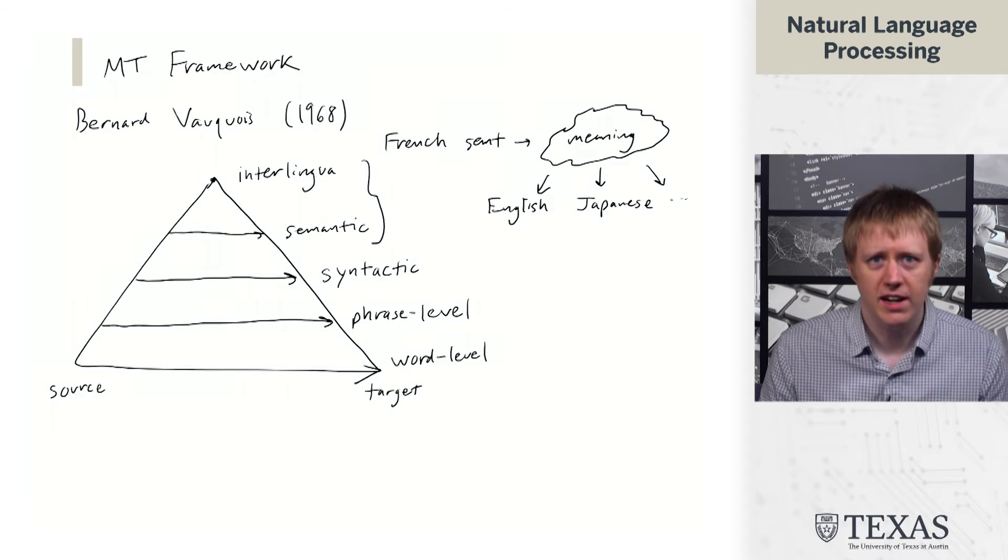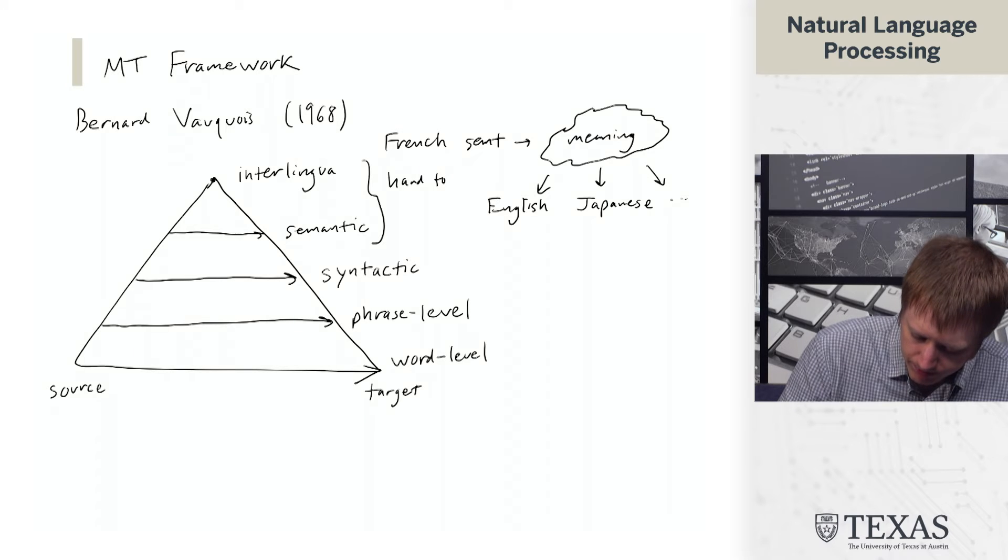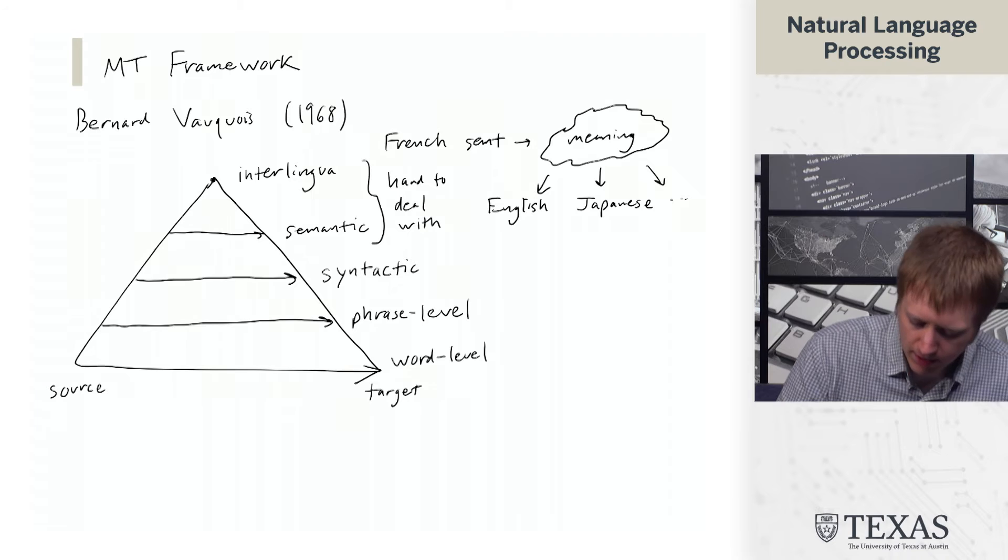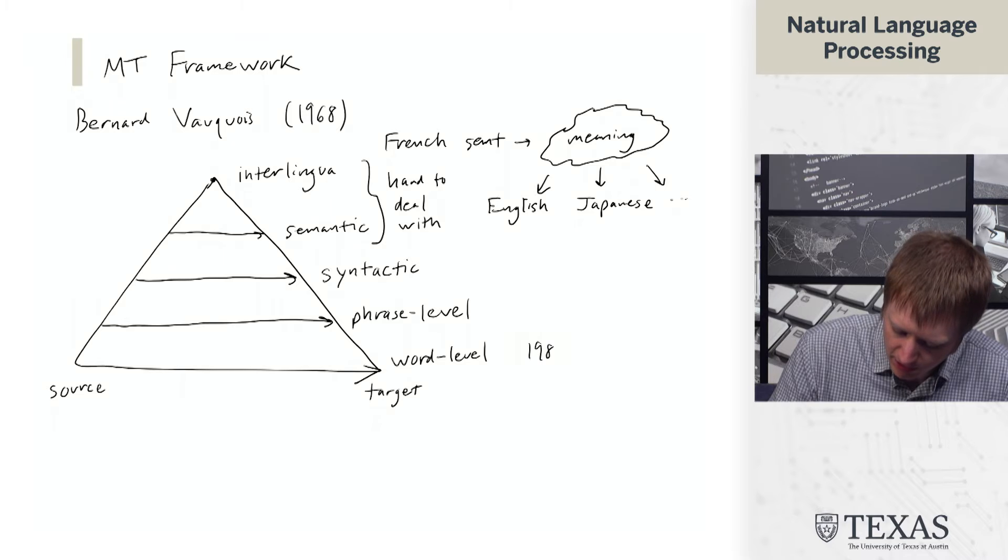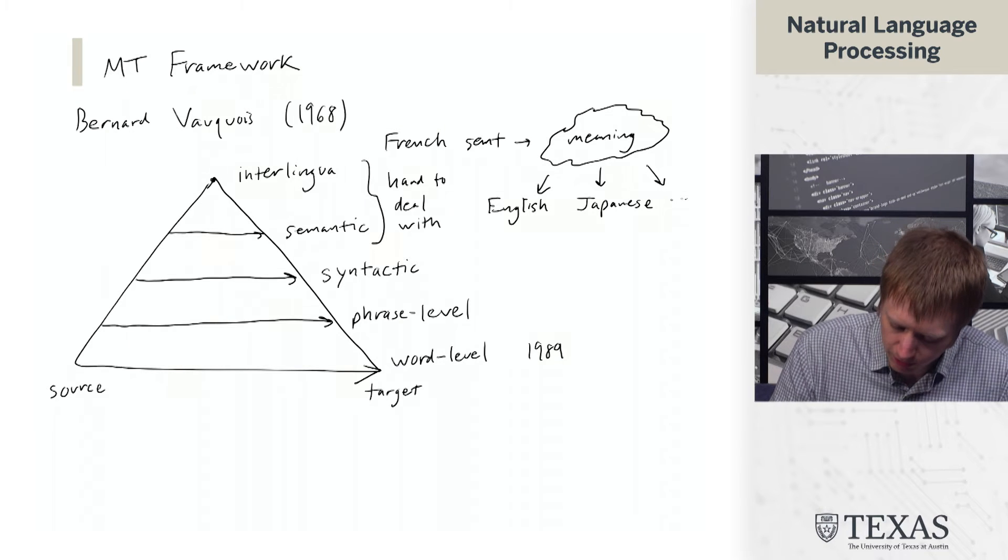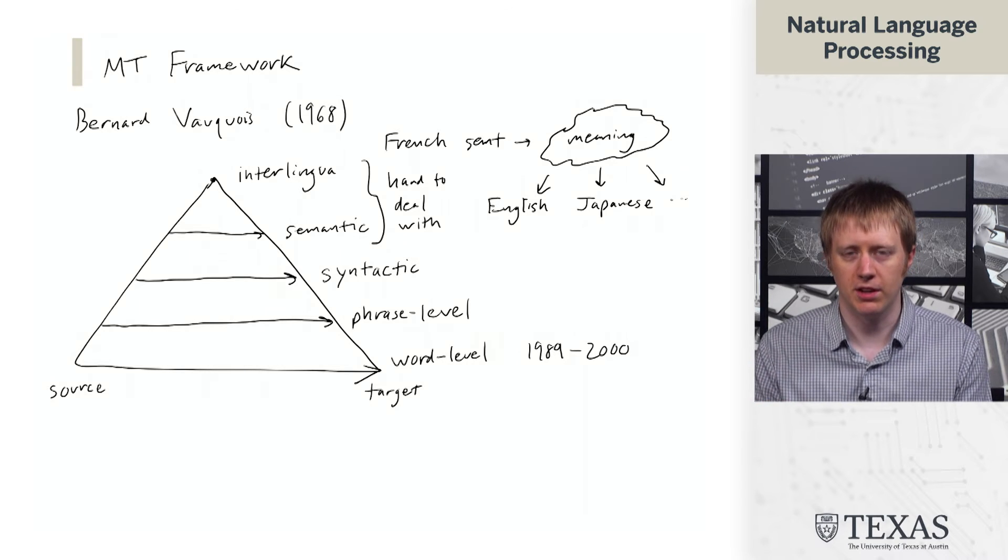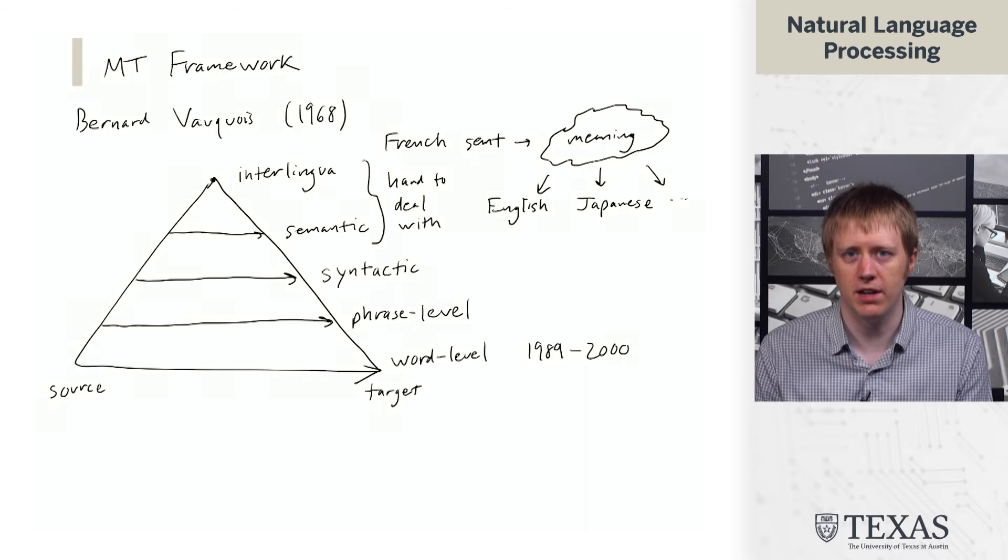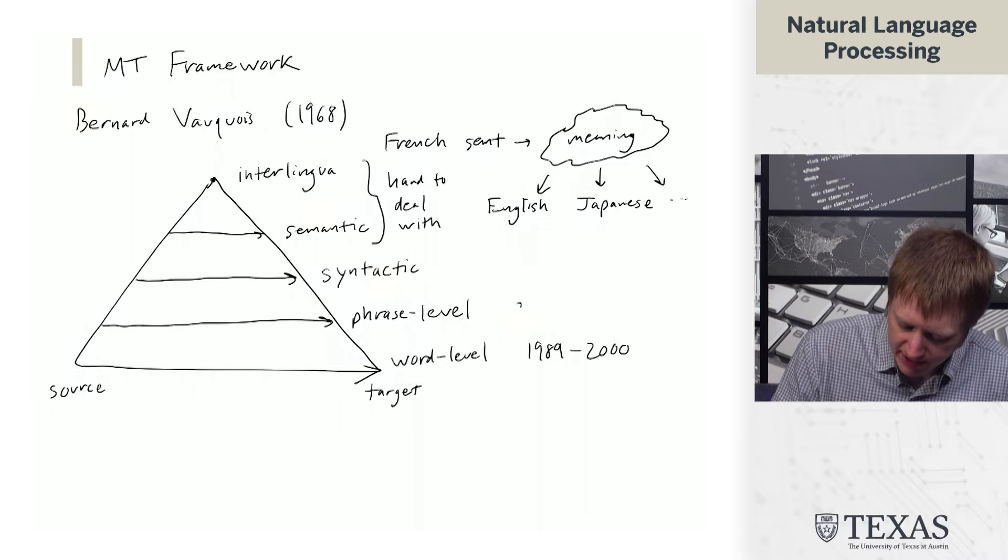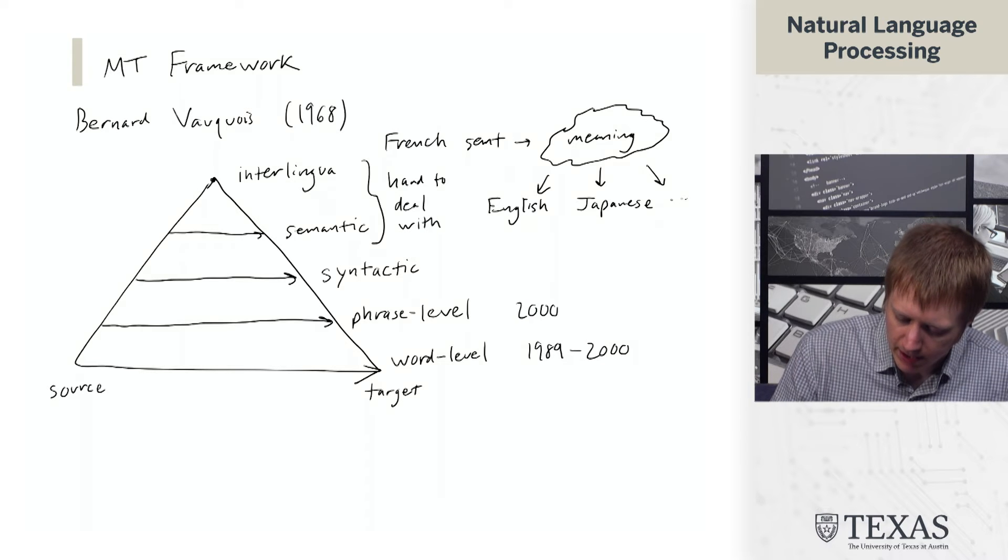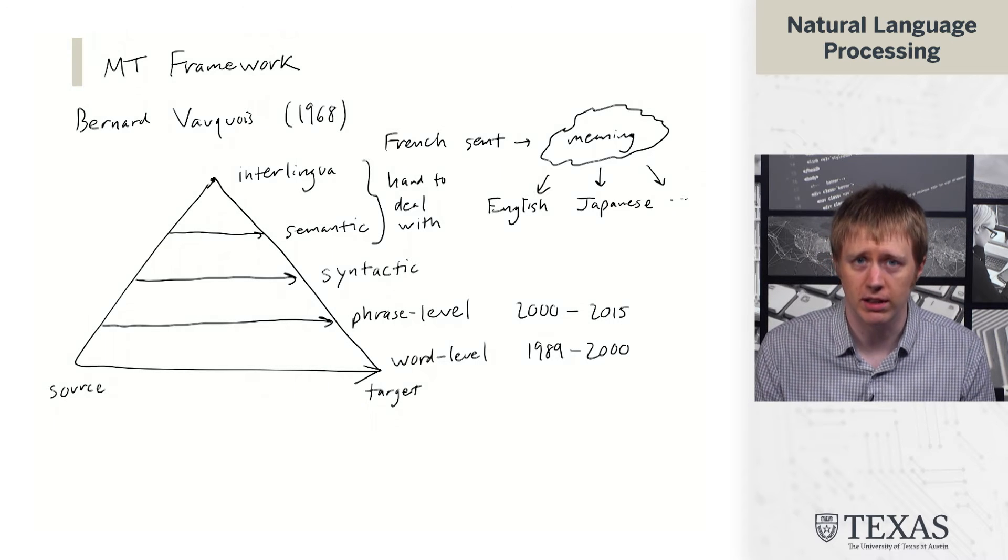So these upper layers here are pretty hard to deal with. And so the history of machine translation is that word-level stuff was popular initially, especially a lot of the early work at IBM on statistical translation really did operate at the word level. And then phrases were really the dominant paradigm from roughly 2000 to roughly 2015 when neural machine translation started really taking over.